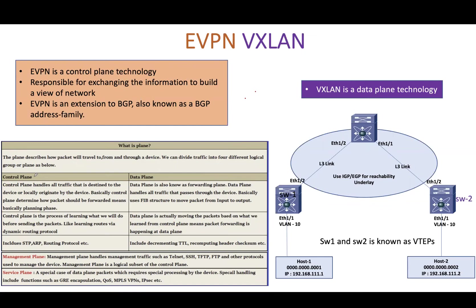The data plane is also known as the forwarding plane. The data plane is responsible for traffic forwarding based on control plane logic. For example, let's say host 1 wants to communicate with host 2. Host 1 and host 2 are in the same VLAN — VLAN 10 — but they are connected by Layer 3 transport. So how are we going to get the traffic from switch 1 to switch 2?